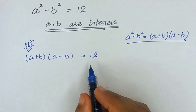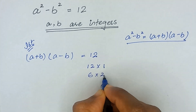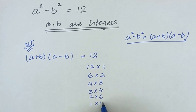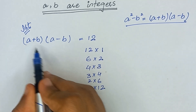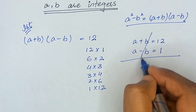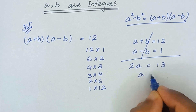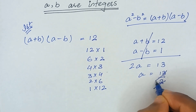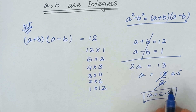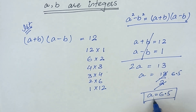The factors of 12 can be: 12 times 1, 6 times 2, 4 times 3, 3 times 4, 2 times 6, and 1 times 12. If a plus b is equal to 12 and a minus b is equal to 1, then adding these two equations gives 2a equal to 13, so a equals 13 divided by 2 which is 6.5 — not an integer. That means if one factor is even and the other is odd, it gives a decimal value, not an integer.